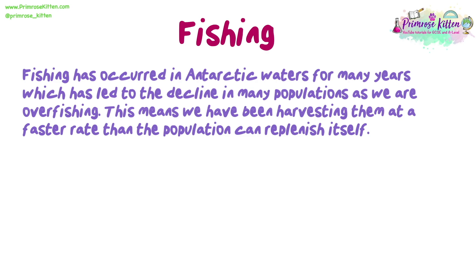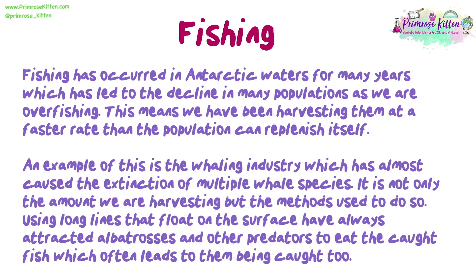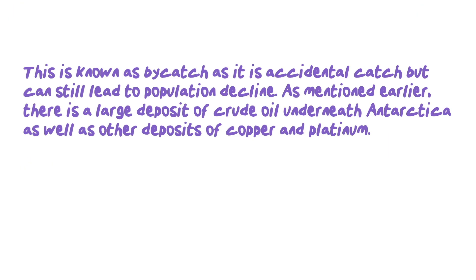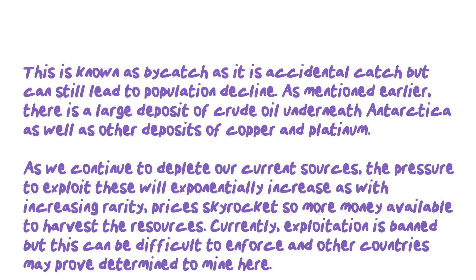Fishing has occurred in Antarctic waters for many years, which has led to the decline in many populations as we are overfishing — harvesting them at a faster rate than the population can replenish itself. An example is the whaling industry, which has almost caused the extinction of multiple whale species. It is not only the amount we are harvesting, but the methods we use. Using long lines that float on the surface attracts albatrosses and other predators to eat the caught fish, which often leads to them being caught too — this is known as bycatch. There are also large deposits of crude oil underneath Antarctica, as well as copper and platinum. As we continue to deplete our current sources, the pressure to exploit these will exponentially increase, as with increasing rarity prices skyrocket. Currently, exploitation is banned, but this can be difficult to enforce, and other countries may prove determined to mine here.